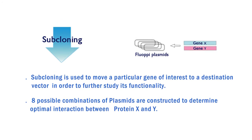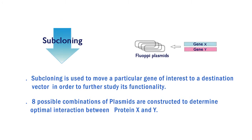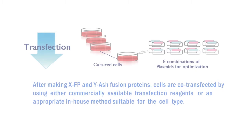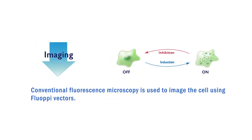Eight possible combinations of plasmids are constructed to determine the optimal interaction between protein X and Y. After making XFP and Y ash fusion proteins, cells are co-transfected. Conventional fluorescence microscopy can be used to image the cell using FLOPI vectors.